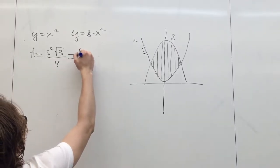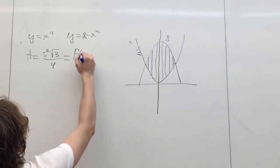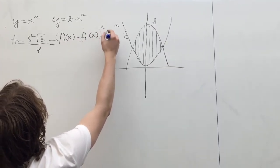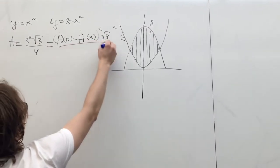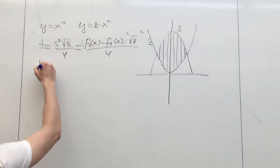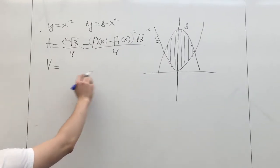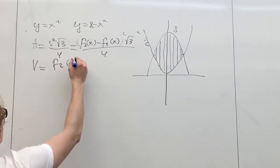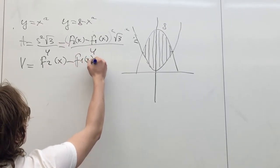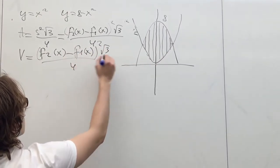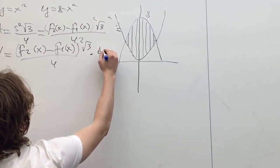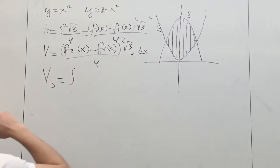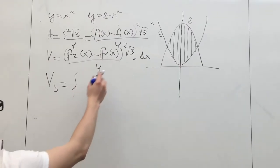The area of one equilateral triangle equals the side squared times the square root of 3 over 4, which in our case equals the difference between the two functions all squared times the square root of 3 over 4. The volume of this triangle will equal its area times its depth, which is dx.